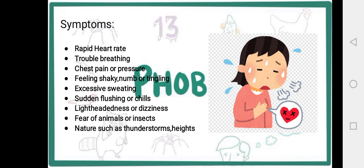What are the symptoms of specific phobia? Symptoms include rapid heart rate, trouble breathing, chest pain or pressure, and excessive sweating.